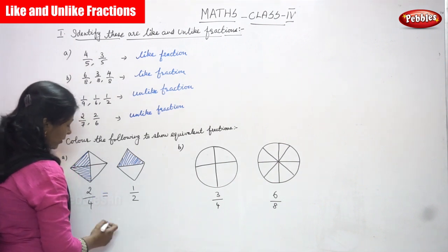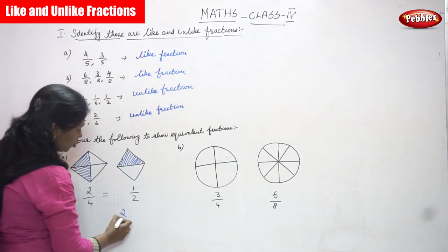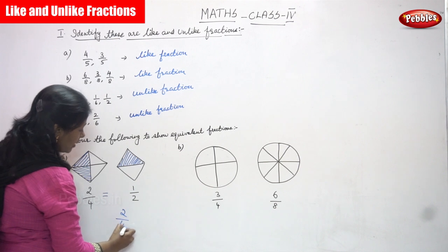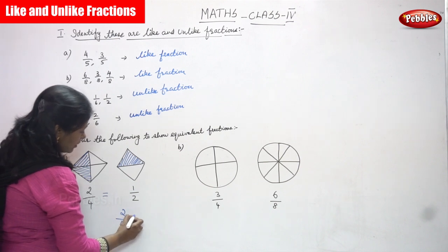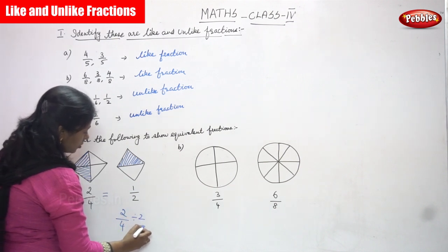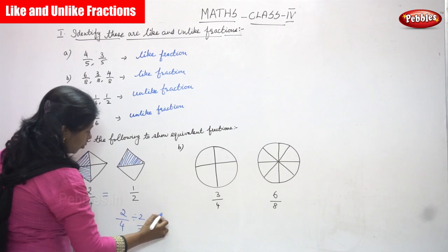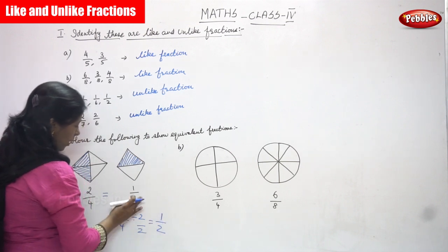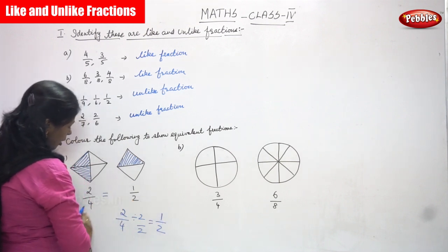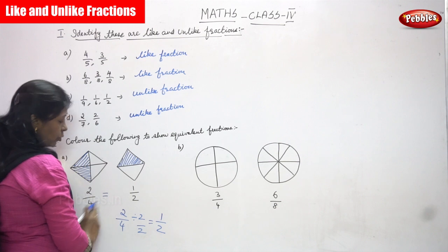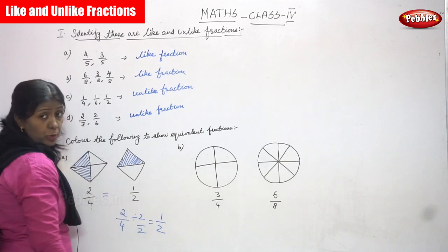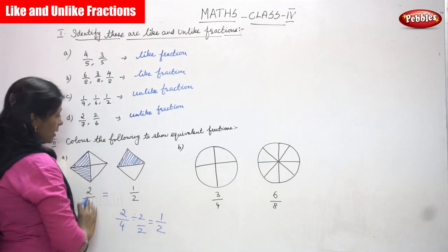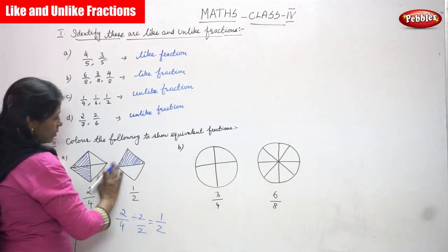How can you say it is an equivalent fraction? Because 2 by 4 divided by 2 gives you 1 by 2. So 1 by 2 is equivalent to 2 by 4, and 2 by 4 is equivalent to 1 by 2. So it is an equivalent fraction.